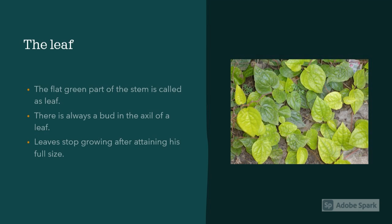Now let's talk about the most important and interesting part: the leaf. The flat green part of the plant is called the leaf. Wait, did I say green? Yes, but most of the leaves are green because of the pigment called chlorophyll, but not all are green.